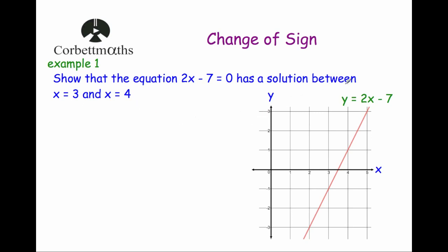I've drawn the graph y equals 2x minus 7. If the equation equals 0, and you draw the graph y equals the non-zero side of the equation, you get y equals 2x minus 7. That graph crosses the x-axis at 3.5, which is the solution to the equation. Since the equation equals 0, y equals 0, and y equals 0 is the x-axis — so where the graph crosses the x-axis is a solution.